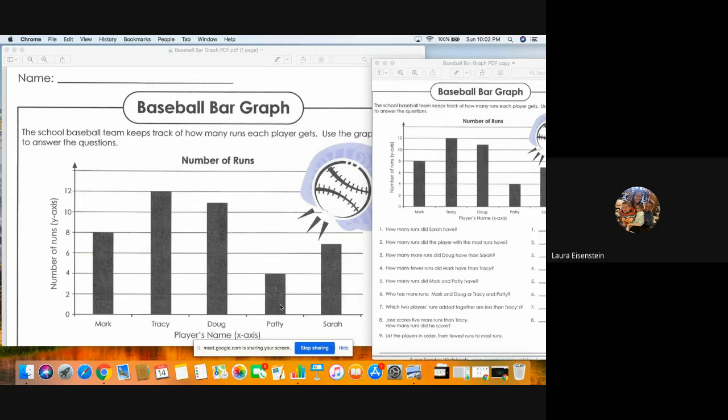Number eight says Jose scores five more runs than Tracy. How many runs did he score? So there's not a spot on here for Jose, but they're saying that Jose, he scored five more than Tracy. So you would look, see how many does Tracy have, and then you have to add the five more to figure out how many Jose had. That would be your answer. So you would add five to Tracy's number.